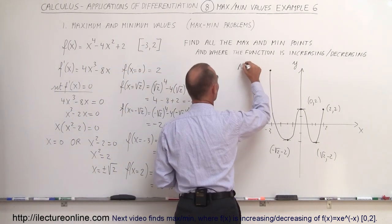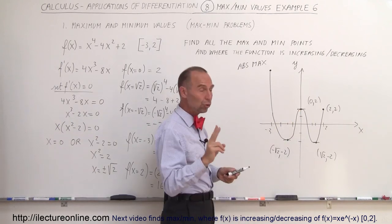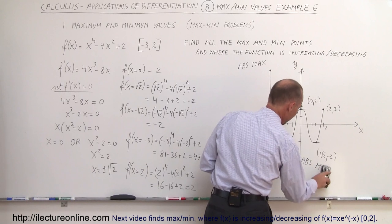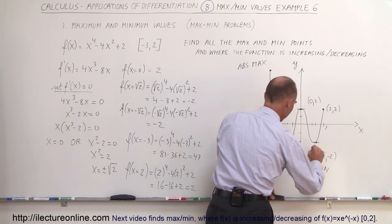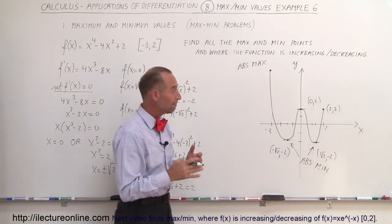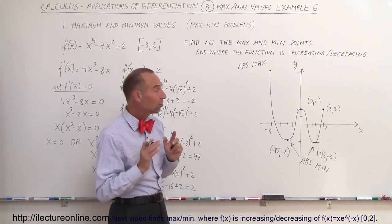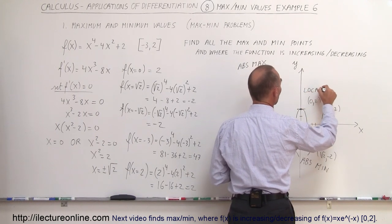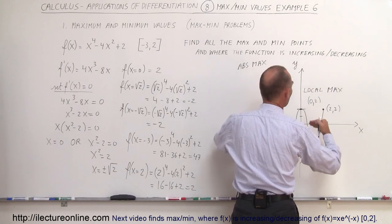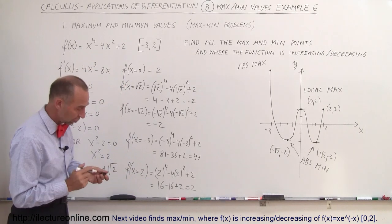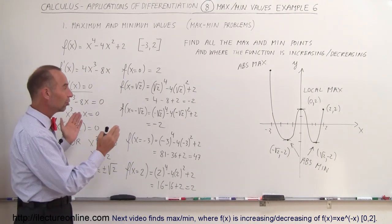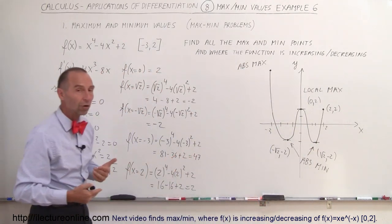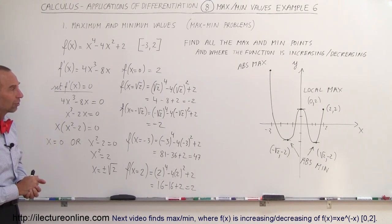The point at (−3, 47) is the absolute max because it's the highest point on the interval. We have two absolute minimum points — (√2, −2) and (−√2, −2) — both sharing the same minimum value, so those are the absolute mins. The end point (2, 2) and the critical point (0, 2) are neither absolute maximum nor minimum, but (0, 2) and (2, 2) can be considered local maximum values — they're the highest values in their vicinity. That's how we evaluate a function over an interval, accounting for the end points to determine absolute max or min.